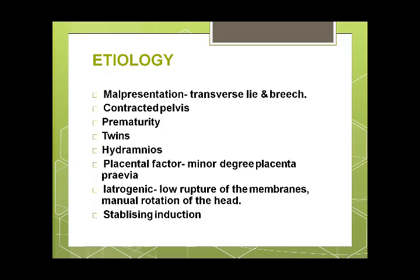The risk of cord prolapse is much lower when the fetal presenting part is snugly fitting the lower uterine segment. Whenever there is malpresentation, the risk of cord prolapse increases. Risk factors include transverse lie, breech, contracted pelvis, prematurity, twins, polyhydramnios, and placenta praevia — all can lead to cord malpresentation.